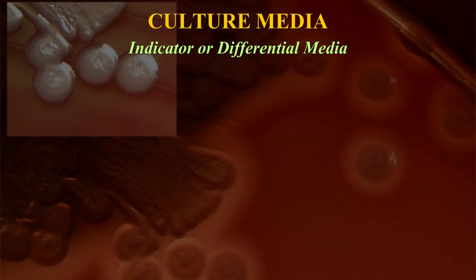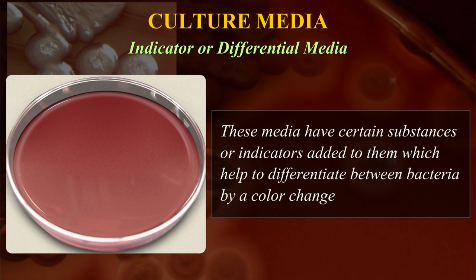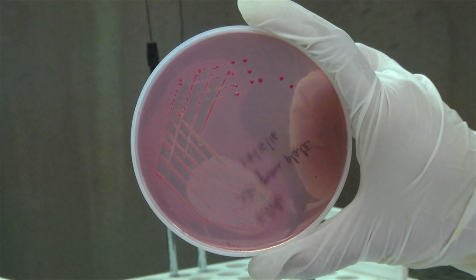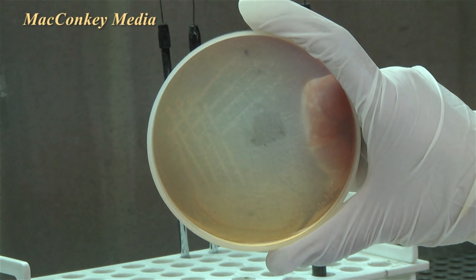Indicator or differential media have certain substances or indicators added to them which help to differentiate between bacteria, usually by a colour change. An example is McConkey's medium, which produces red-coloured colonies of bacteria that are able to ferment the carbohydrate present in the medium. In contrast, bacteria which do not ferment carbohydrate produce colourless colonies.